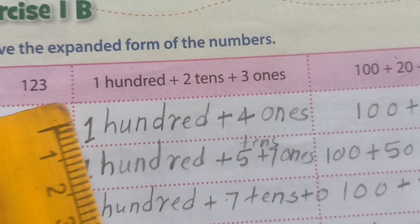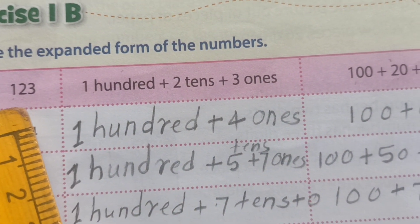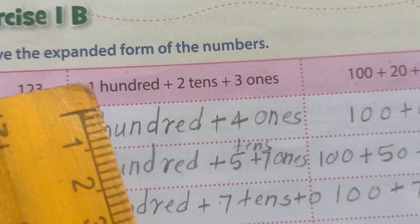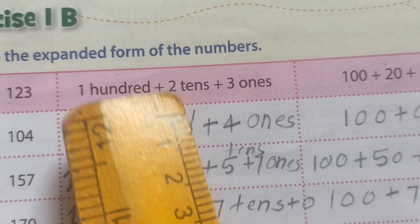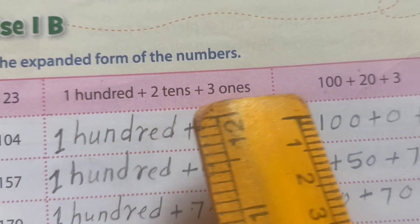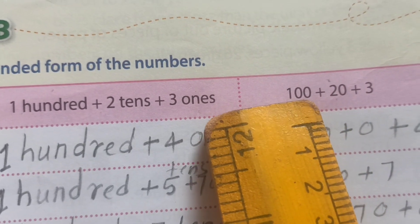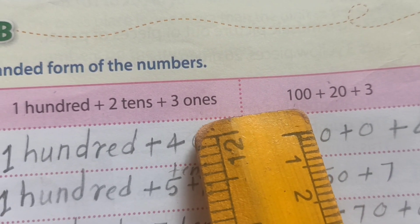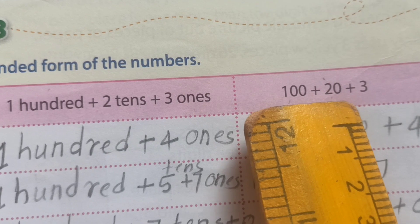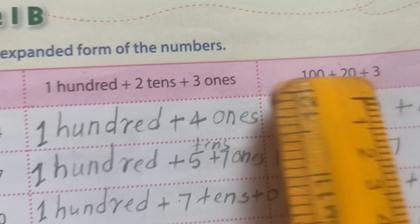Means this one number 123 we expand in words as 100 plus 2 tens plus 3 ones, and in numerical as 100 plus 20 plus 3.